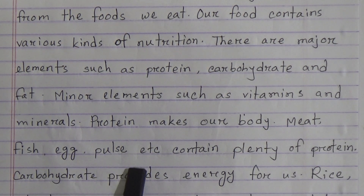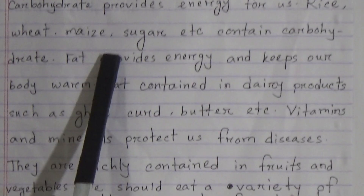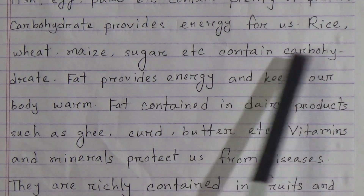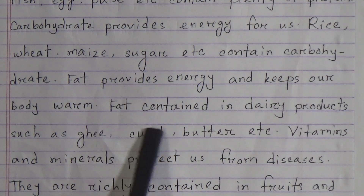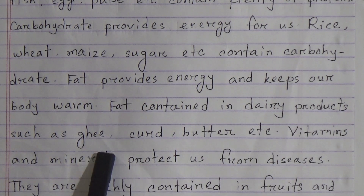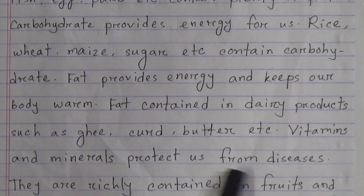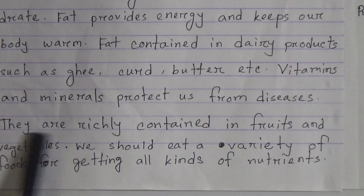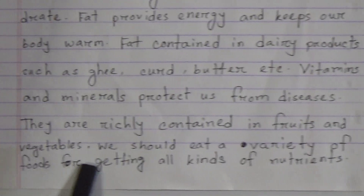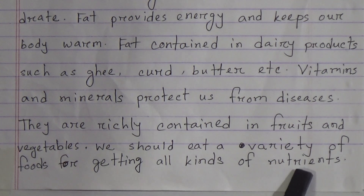Protein makes our body. Meat, fish, egg, and pulse contain plenty of protein. Carbohydrate provides energy for us. Rice, wheat, maize, and sugar contain carbohydrate. Fat provides energy and keeps our body warm. Fat is contained in dairy products such as ghee, curd, and butter. Vitamins and minerals protect us from diseases. They are richly contained in fruits and vegetables. We should eat a variety of foods for getting all kinds of nutrients.